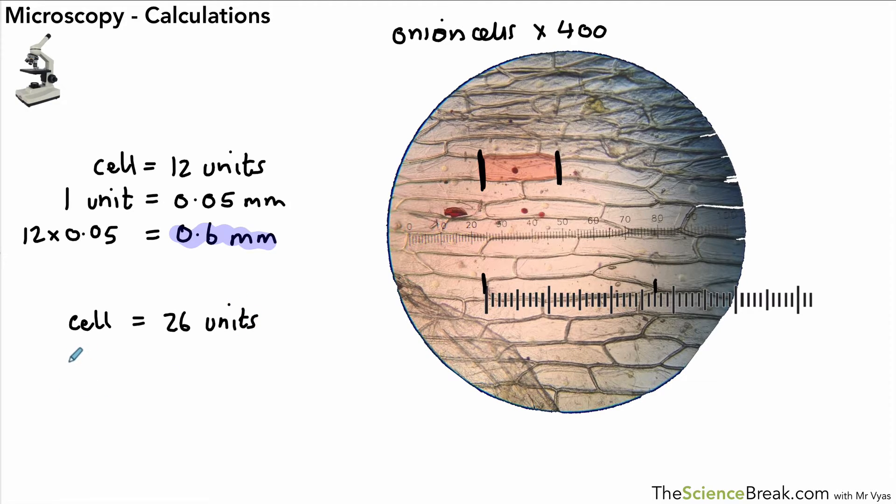We know that again one unit is worth 0.05, so we have a total length of 1.3 millimeters. That's quite long for a cell but that's what we've got based on our calculations.